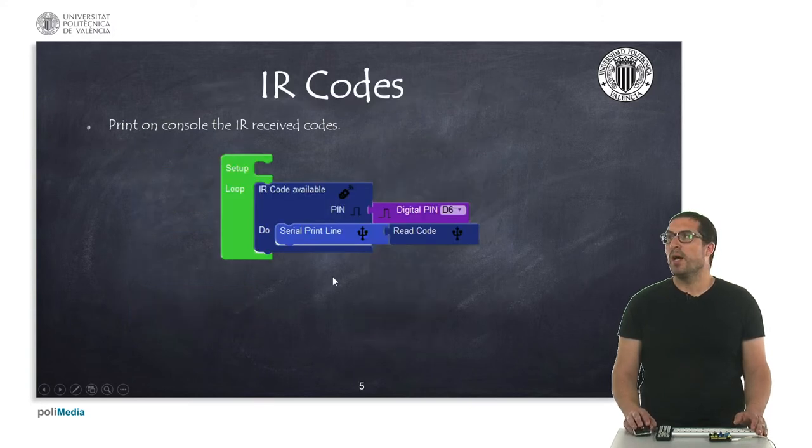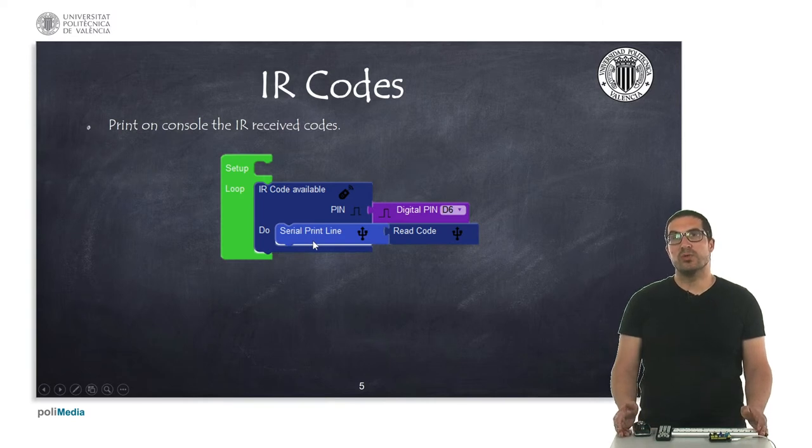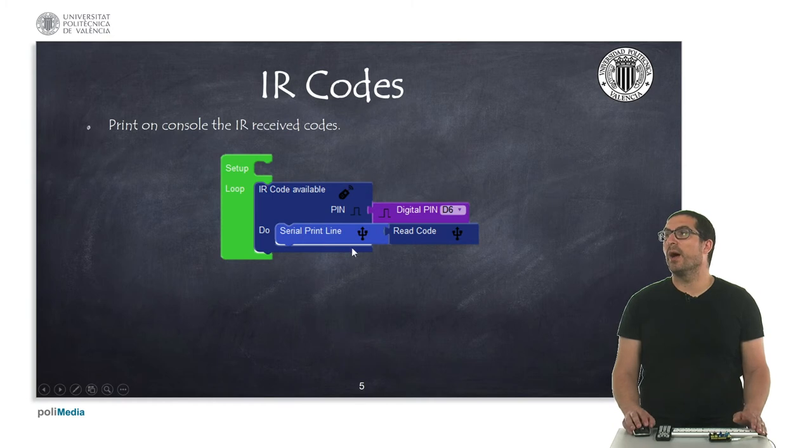In this first example, as you can see here, I'm printing the code I'm receiving from the infrared, so whenever there's a code available, I will be able to use this instruction here. And this example is useful to see which codes correspond to each of the buttons of your controller.